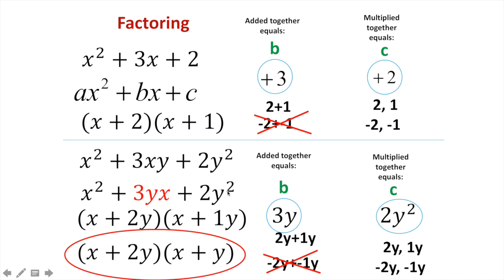And we really just used the same exact method that we did up here. The only difference was, instead of the coefficient just being a 3, it's now a 3y. And that's it. Everything else pretty much functions the same.